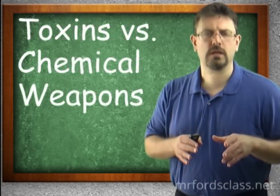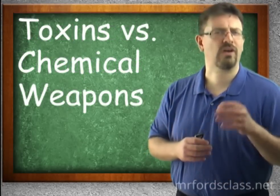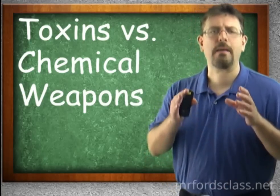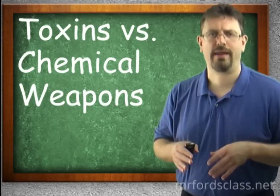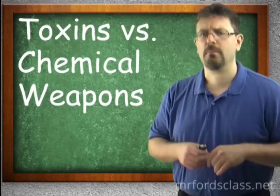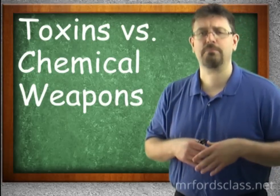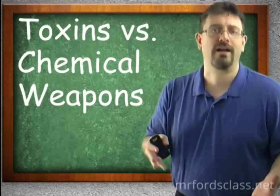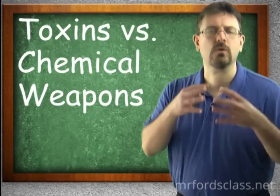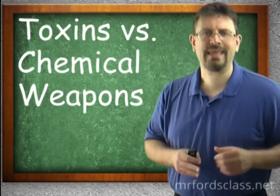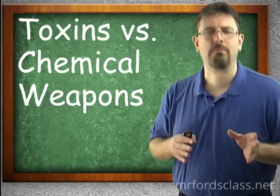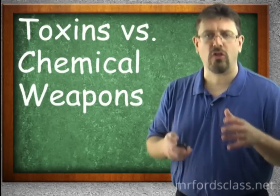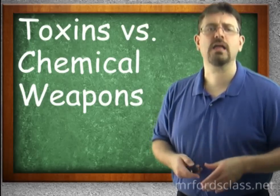Now, there's some confusion over what's a toxin and what's a chemical weapon. A toxin is a biological byproduct, meaning they're made by an organism — they can be made by an animal, a plant, bacteria, or frogs. These are made by a living organism; they're a byproduct. A chemical weapon is not a byproduct of a living organism. These are things created in labs, created by humans.